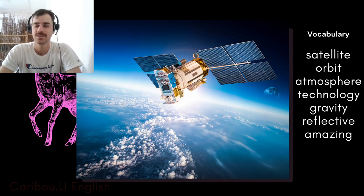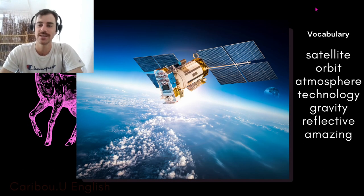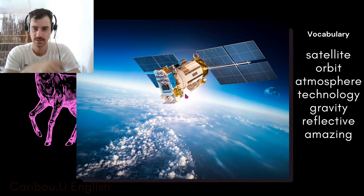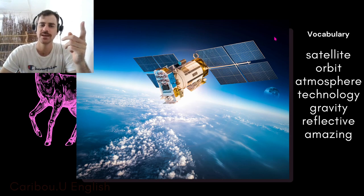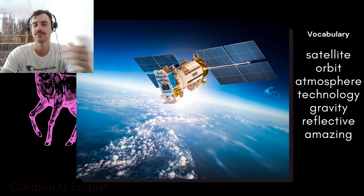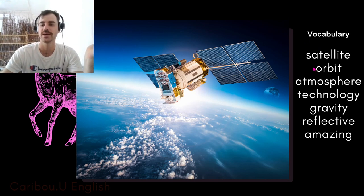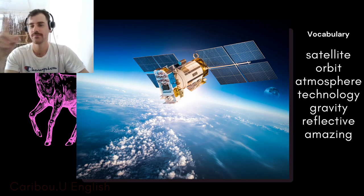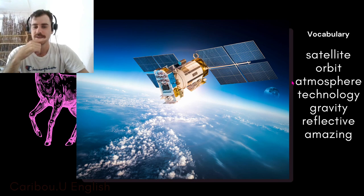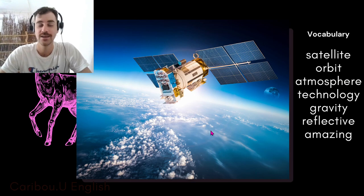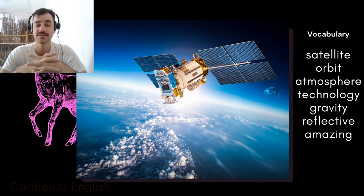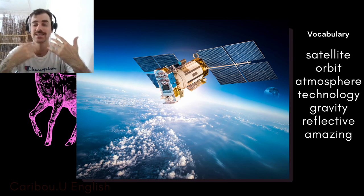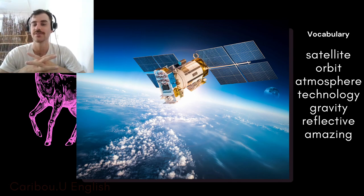There are some more difficult words than the first picture, for sure. A satellite is a device which goes around the earth in space. We don't say it 'goes around' the earth — the verb is orbit. So satellites orbit the earth. And this is the earth's atmosphere — the sky, the clouds, all of the various chemicals and gases. That's called atmosphere. We can say the satellite is orbiting above the earth's atmosphere.